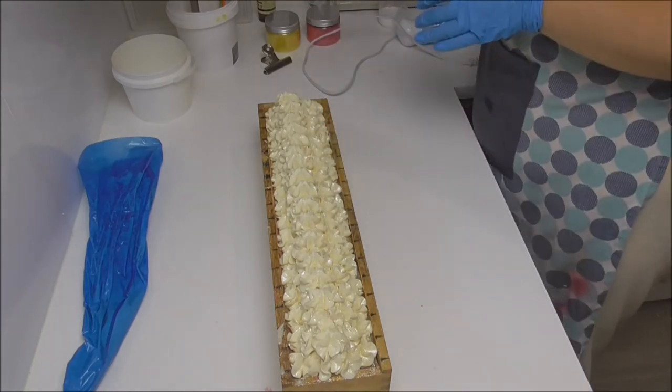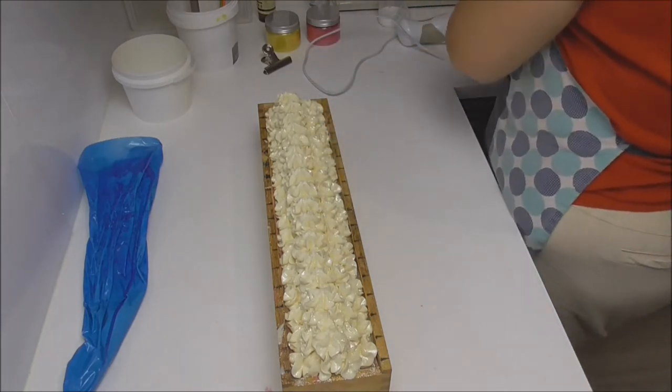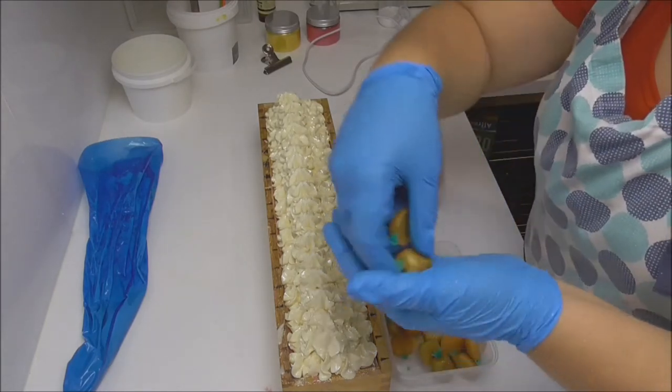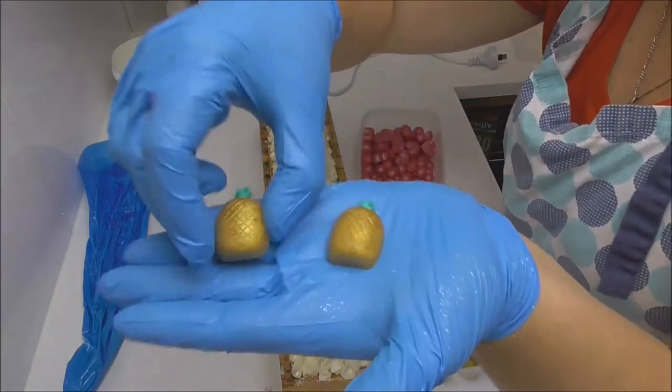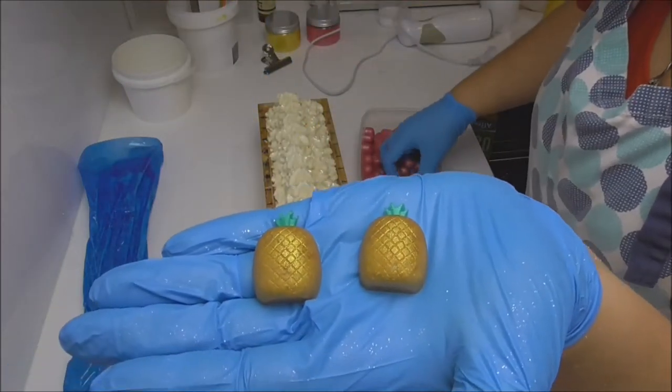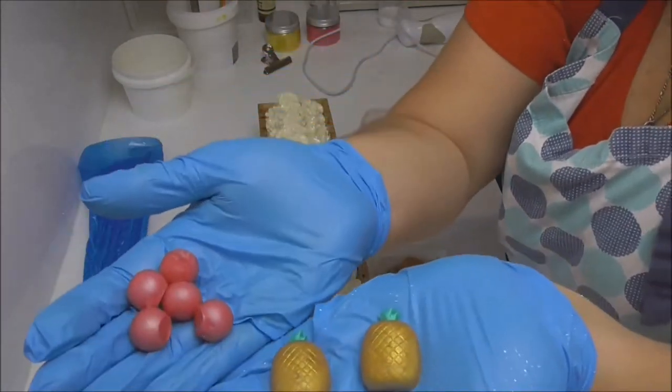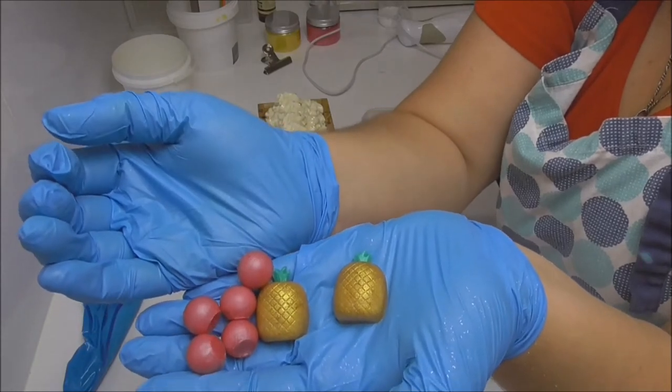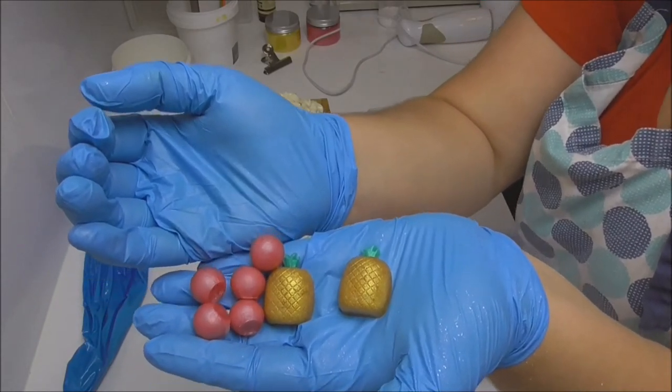I've got that on there. Now to do my embeds, I have here, which I've made out of some melt and pour, some little pineapples and I also have some little round pink balls which will be my pink berries. So we'll go and get these put on.